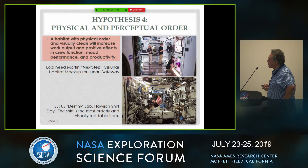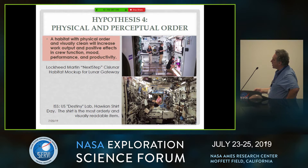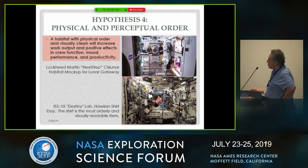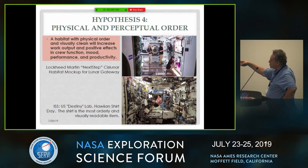Hypothesis four: physical and perceptual order. A habitat with physical order and visually clean appearance will increase work output and positive effects on crew function, mood, performance, and productivity. Here in the lower picture is the U.S. Destiny lab on ISS, and the irony is that the astronaut in the Hawaiian shirt has the most visually orderly element in the whole picture.